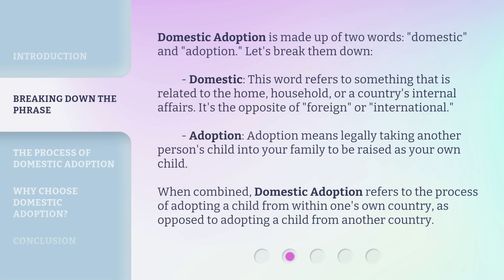Domestic adoption is made up of two words: domestic and adoption. Let's break them down. Domestic: this word refers to something that is related to the home, household, or a country's internal affairs — it's the opposite of foreign or international. Adoption means legally taking another person's child into your family to be raised as your own child. When combined, domestic adoption refers to the process of adopting a child from within one's own country, as opposed to adopting a child from another country.